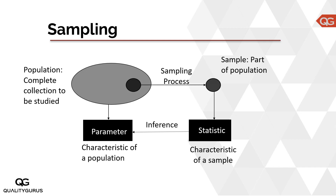Once you measure or take the characteristic of that sample, it will be called a statistic. Remember there is a difference between statistic and statistics. Statistics is the branch of mathematics which you study. Statistic is the characteristic of the sample.